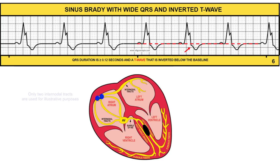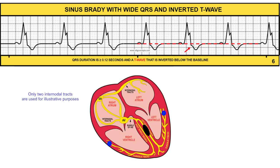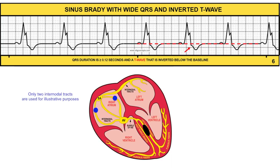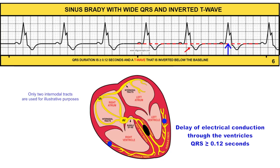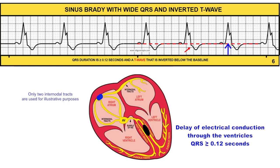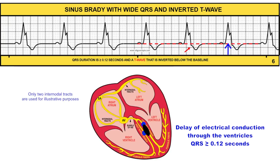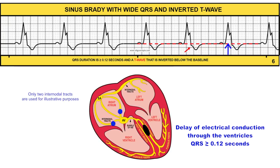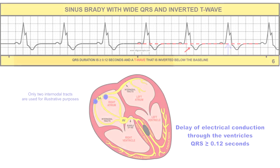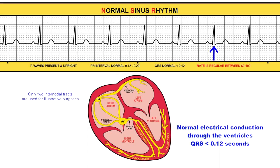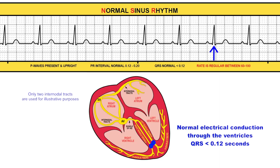A wide QRS is greater than 0.12 seconds or three small boxes, and is usually caused by delay or obstruction along the electrical pathways in the ventricles. A wide QRS with a normal P wave is usually a bundle branch block, but must be confirmed with a 12-lead EKG. Compare this rhythm to normal sinus rhythm.